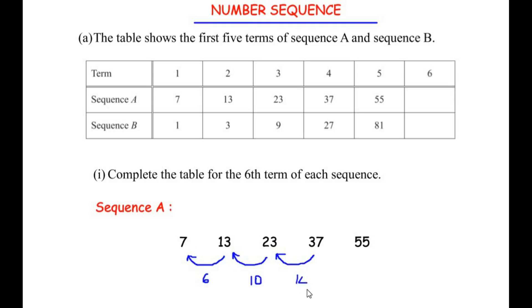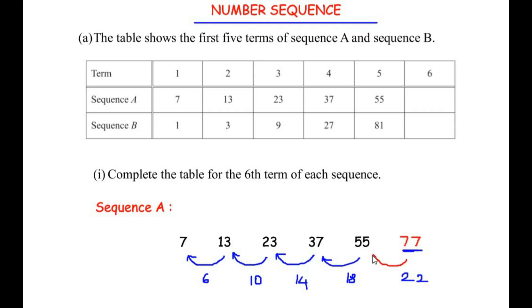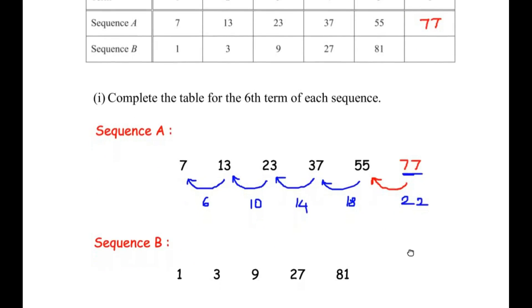Continuing: 37 minus 23 gives 14, and 55 minus 37 gives 18. The common difference is increasing by 4 each time, so the difference between the sixth term and the fifth term must be 22. Therefore we add 22 to 55 to get the sixth term: 55 plus 22 equals 77. We can verify: 77 minus 55 gives 22. So the sixth term of sequence A is 77.